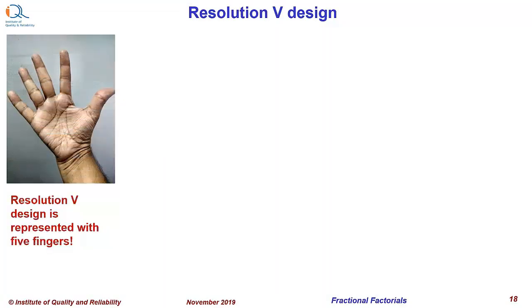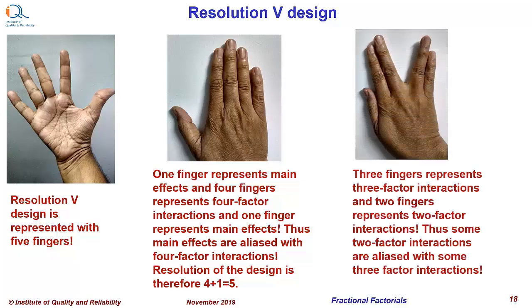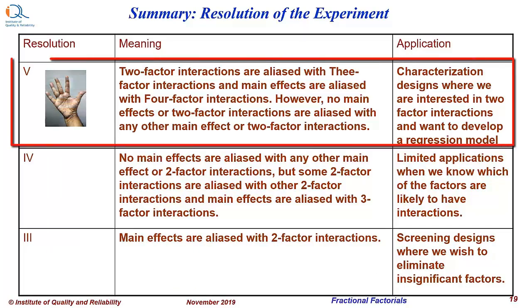Let us look at resolution 5 designs. We can represent this with five fingers of the hand. You can have a combination of 1 and 4, meaning main effects — one finger — are confounded with four-factor interactions. The other possible combination is 3 and 2, meaning two-factor interactions are confounded with three-factor interactions. To summarize resolution 5 designs: two-factor interactions are aliased with three-factor interactions and main effects are aliased with four-factor interactions. However, no main effects or two-factor interactions are aliased with any other main effects or two-factor interactions. Application: characterization designs, where we are interested in two-factor interactions and want to develop a regression model.